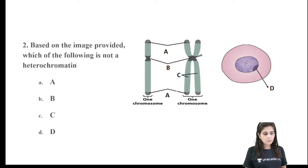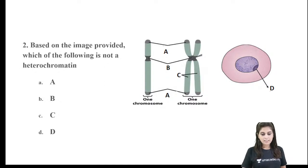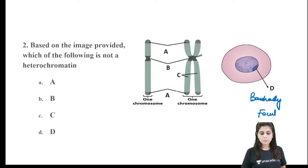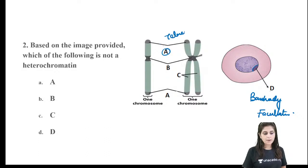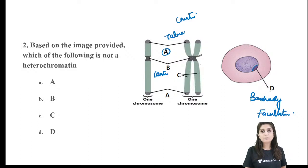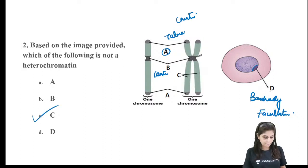So based on the image: D is the bar body — an example of facultative heterochromatin. A is the telomeric ends. B is the centromere. Telomeric ends and centromere are constitutive heterochromatin. C is the arms of a chromosome — along the arms you have both heterochromatin and euchromatin. So which is not a heterochromatin? The answer is C.